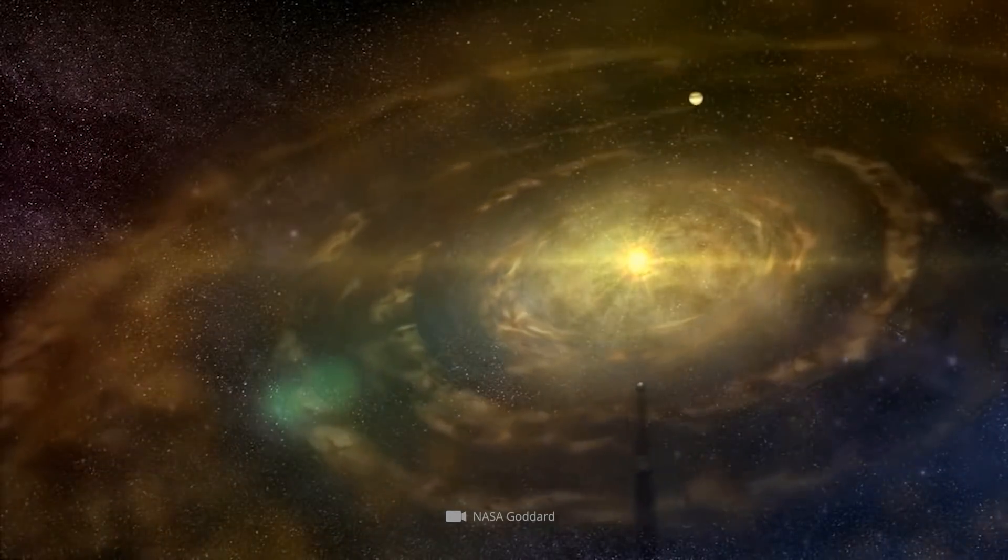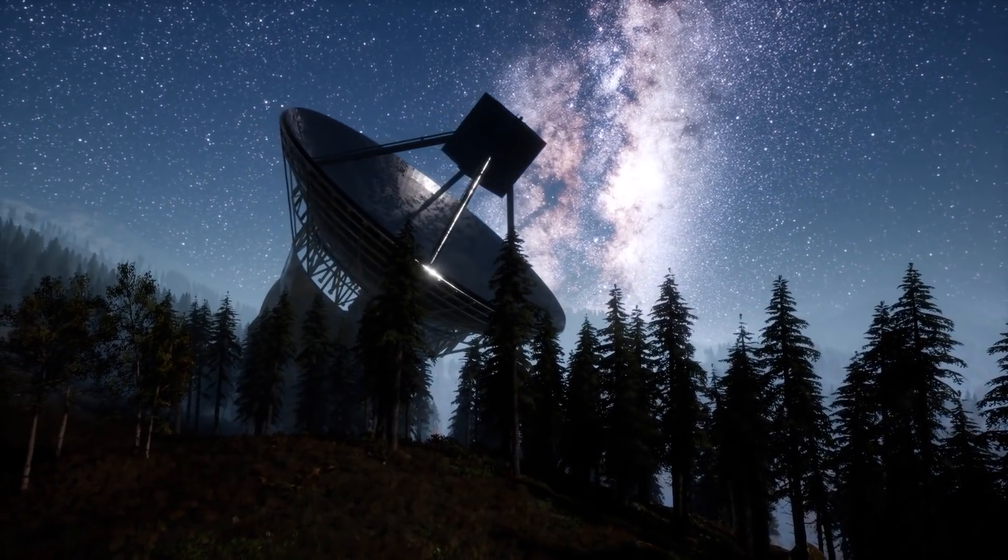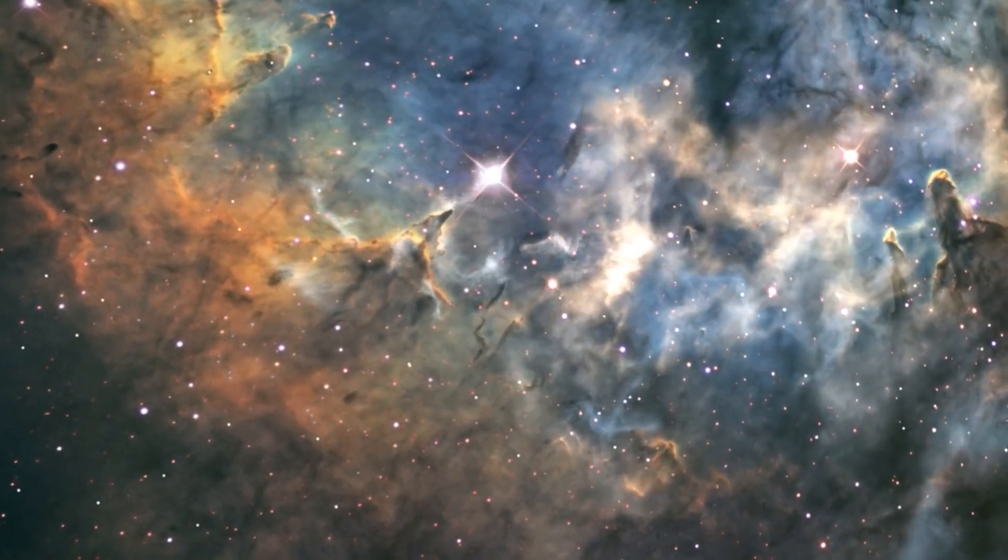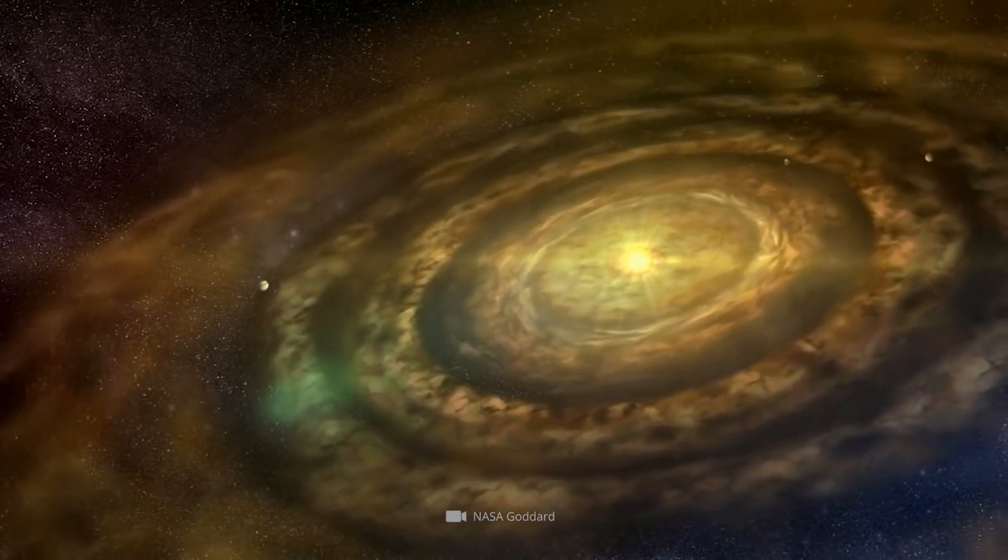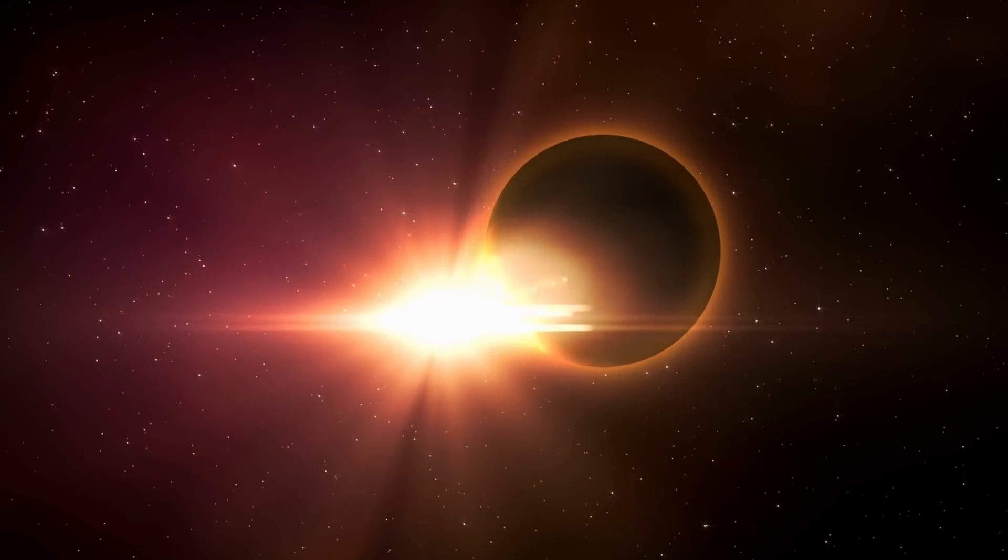At that time, a circumplanetary disk around a fledgling gas giant outside the solar system was identified for the first time. The rotating cloud of gas and dust contains enough material for the formation of three satellites the size of the Earth moon or an impressive supermoon.